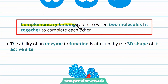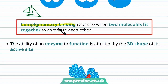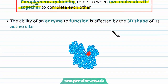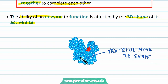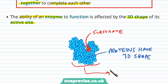We call this complementary binding. Complementary refers to two things fitting together really well — like a triangle in a V-slot. Note it's complementary, not complimentary, which is giving a compliment and has nothing to do with this. Complementary binding is when two molecules fit together to complete each other. The enzyme and substrate come together with complementary binding to form a complex, and this ability is affected by the enzyme's 3D shape and active site. The enzyme is a protein made of amino acids, and its 3D shape is coded for in our DNA.